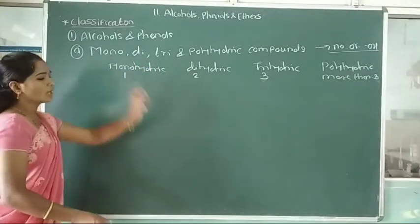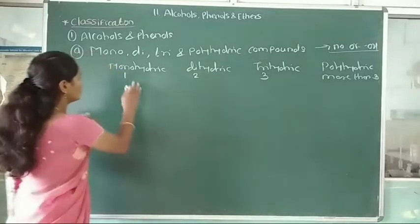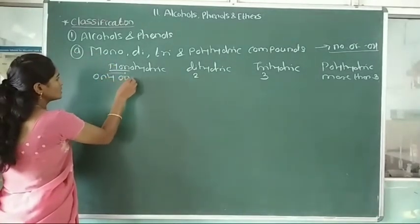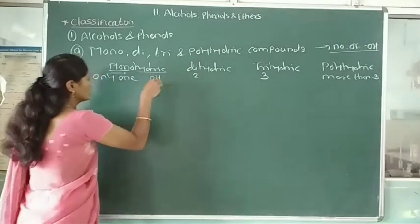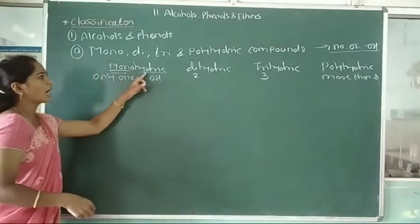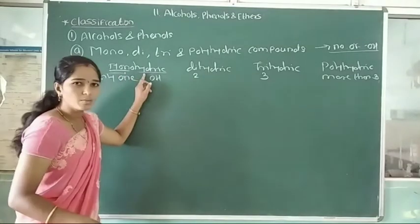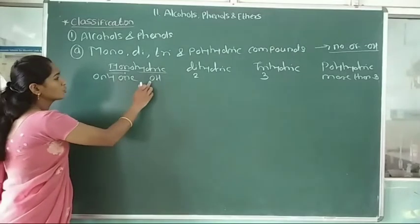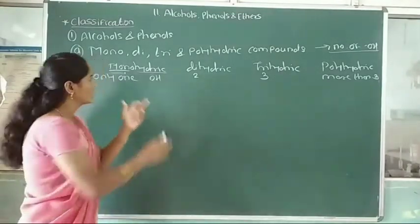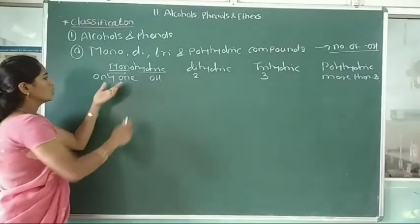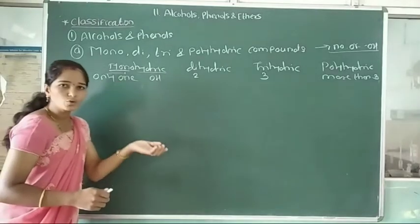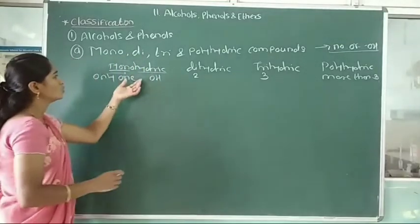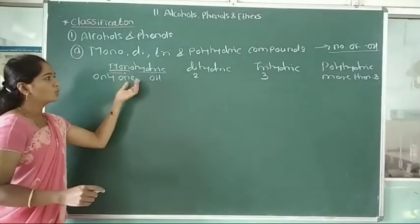First, monohydric compounds. Mono means only one, and hydric means OH. In monohydric compounds, the compound contains only one hydroxy group attached to a carbon atom. It is called a monohydric alcohol or monohydric compound.